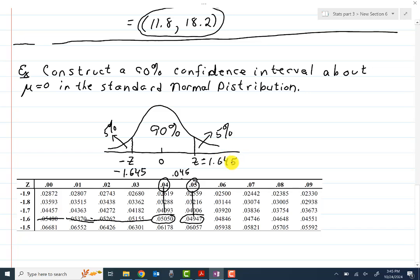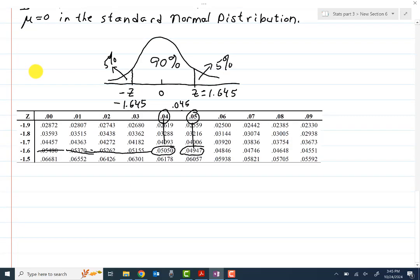And so what I have is 90% of the data is captured between these two Z values. So my confidence interval, then, here would equal negative 1.645 to 1.645.